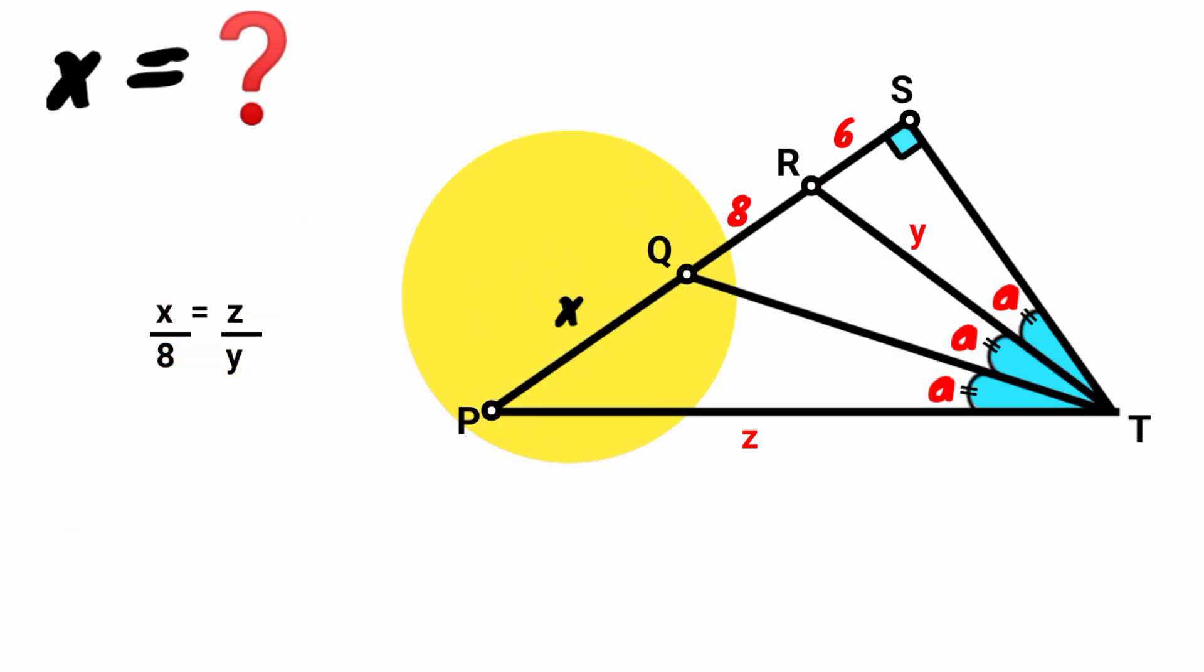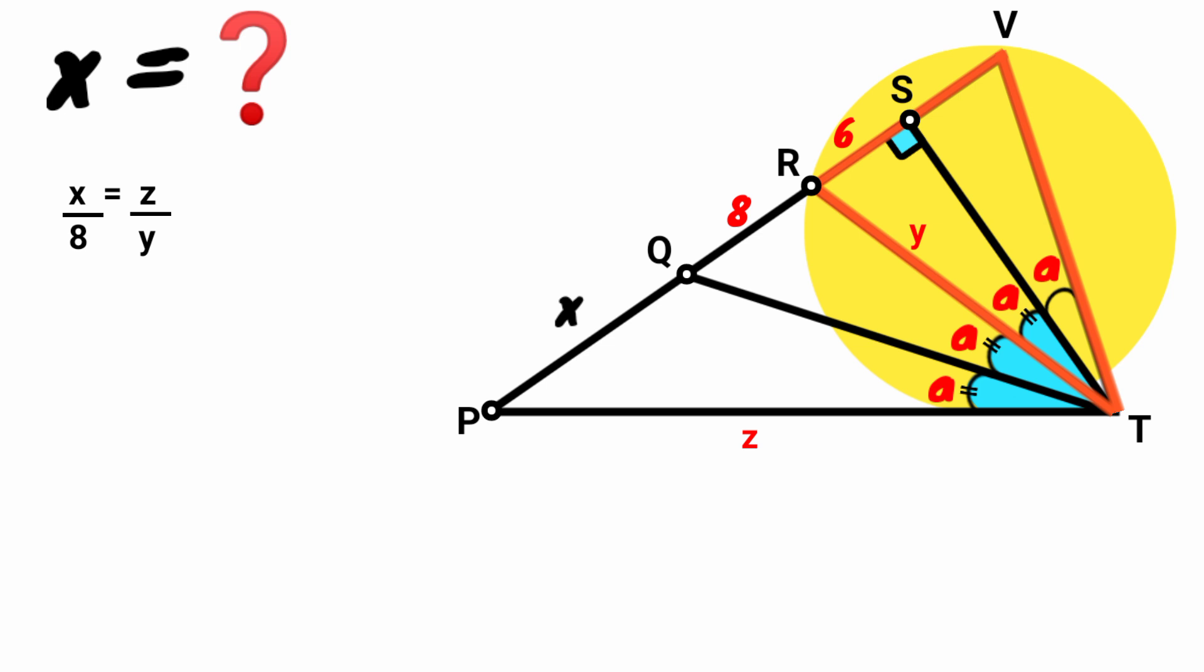Okay, come here. This line PS we extend it to meet another line from this vertex which is also at an angle a with this side. Call this point V.